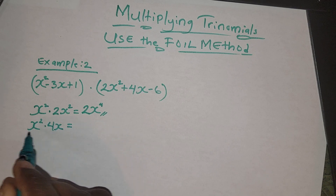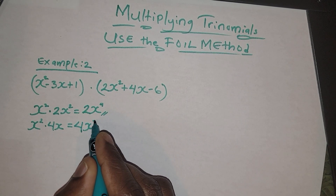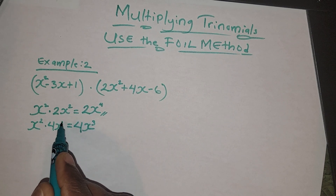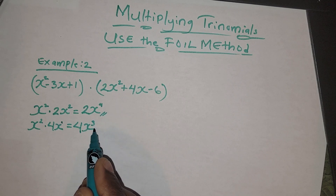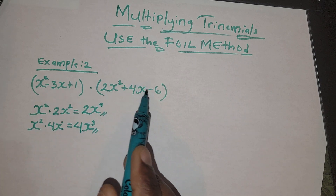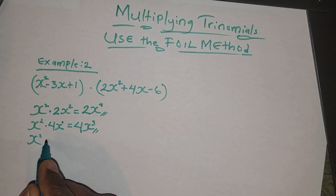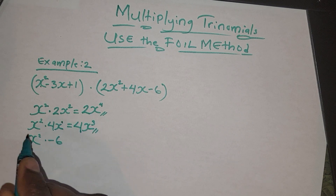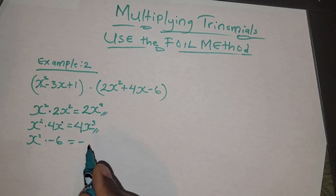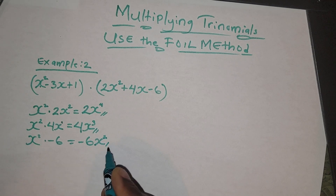Next, we want to multiply x² by 4x. x² times 4x equals 4x³. We have an invisible 1 as the exponent on x, and 1 plus 2 gives us 3. Then x² times -6 gives us -6x².